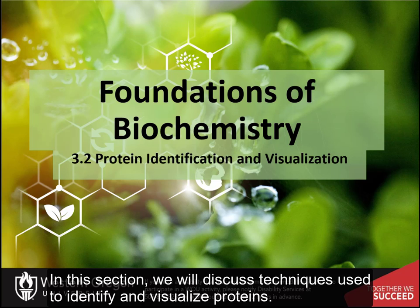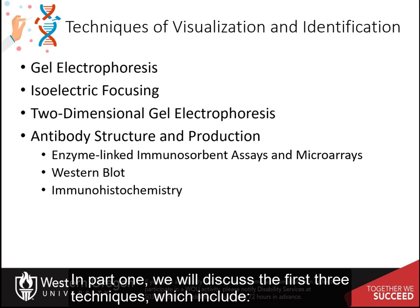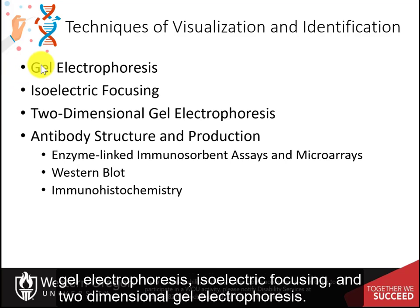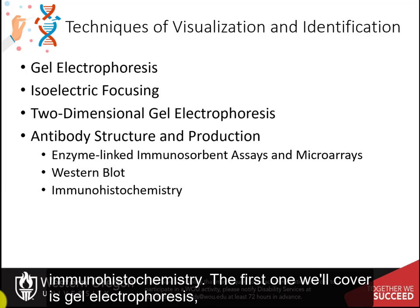In this section, we will discuss techniques used to identify and visualize proteins. We'll break this section into two parts, as it's quite long. In part one, we will discuss the first three techniques, which include gel electrophoresis, isoelectric focusing, and two-dimensional gel electrophoresis. In part two, we'll discuss antibody-aided assays such as ELISA, western blots, and immunohistochemistry.